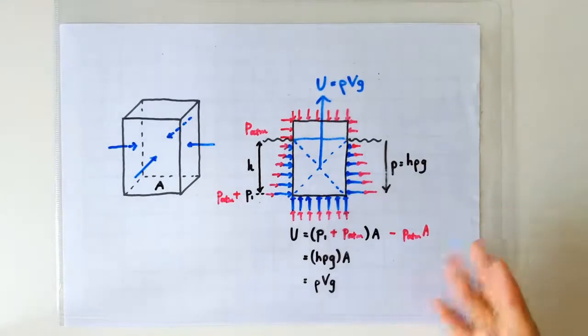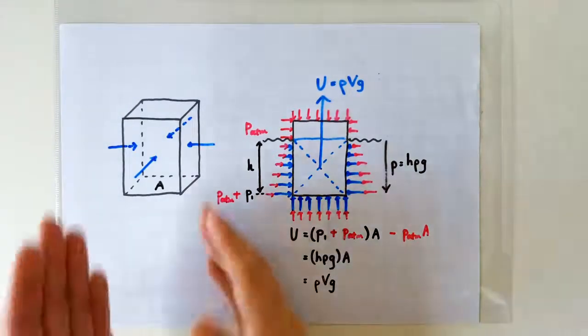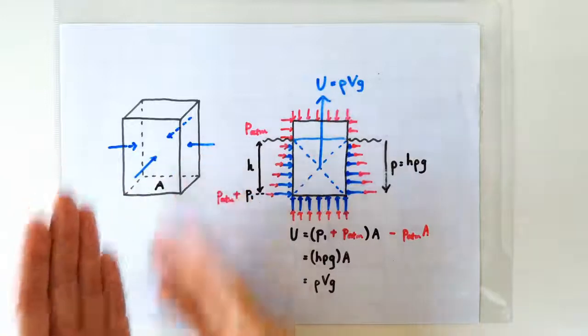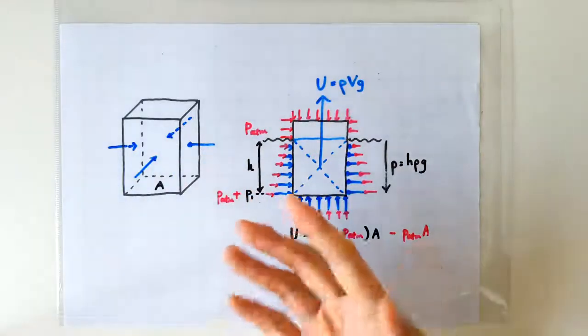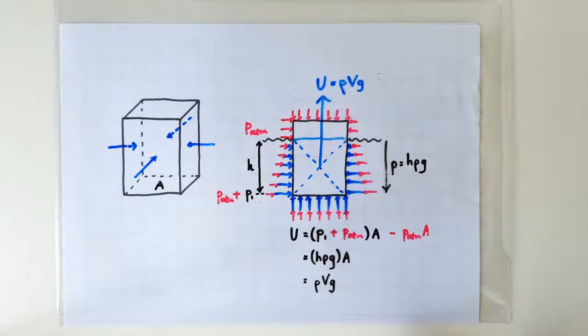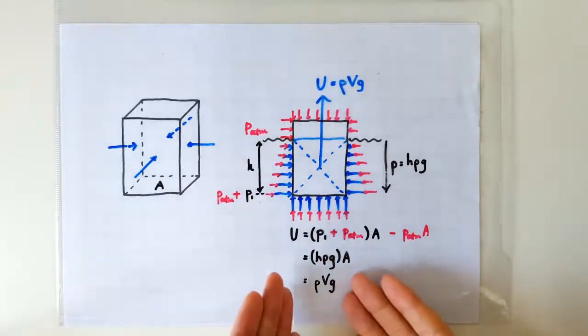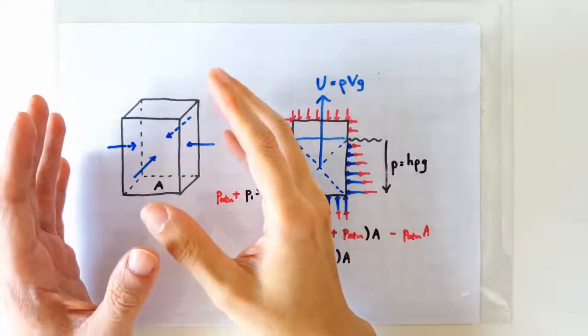You may be thinking, yeah, this proof is only for objects with simple shapes like a cuboid. What about irregularly shaped objects? Well, I've made a video to show that this formula is correct even for irregularly shaped objects.